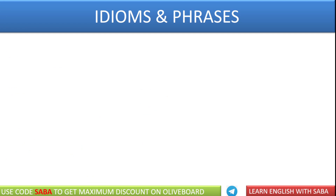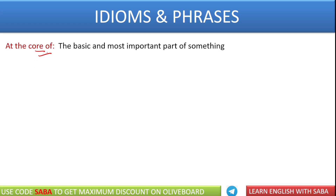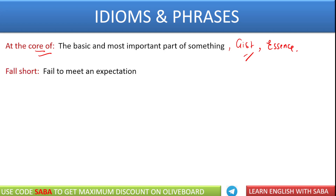Now we have idioms and phrases as well. Idioms and phrases हर दिन पूछे जाते हैं — सबसे best source होता है newspapers and previous year papers. The first idiom is at the core of something. At the core of something means gist of something — किसी भी चीज़ का essence, center of something. That is called at the core of or heart of something — किसी भी चीज़ का दिल, बहुत important part. Then we have fall short of — basically we say fail to meet an expectation. किसी भी expectation पे जब आप खरा नहीं उतरते हैं, that is called fall short of.